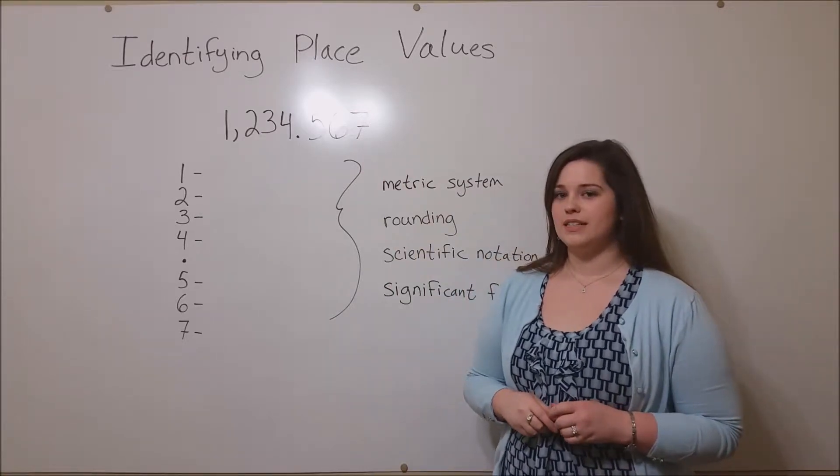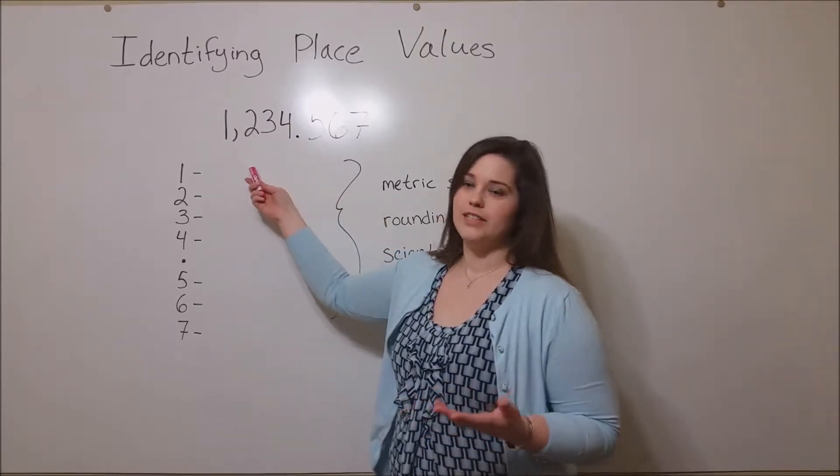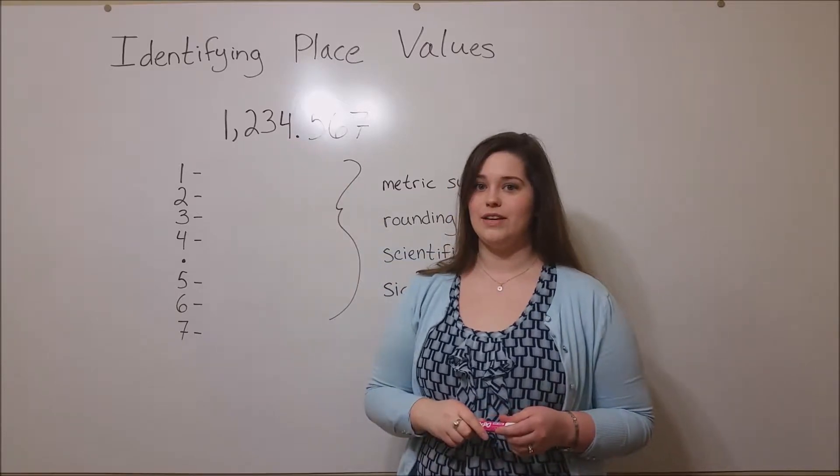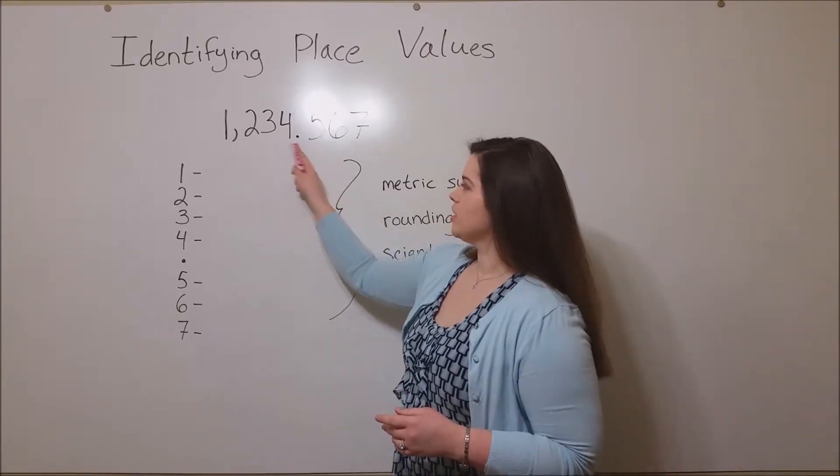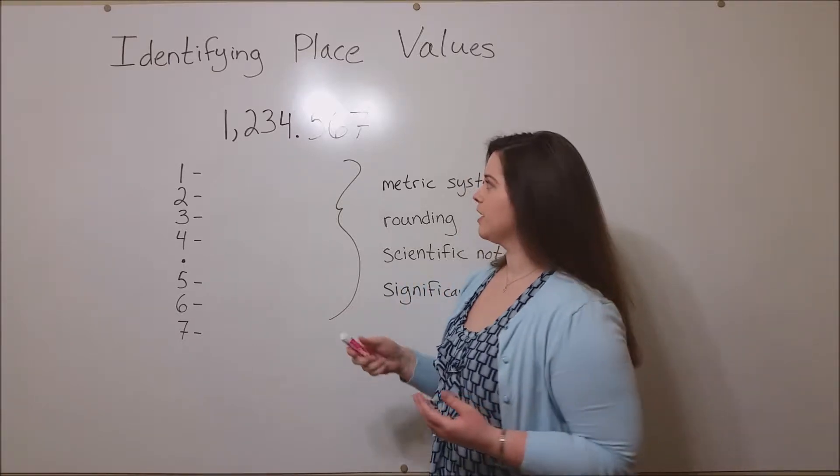What this means is that in any kind of measurement situation where you have a number, for example here we're using 1,234.567, these different digits within the number hold different place values.